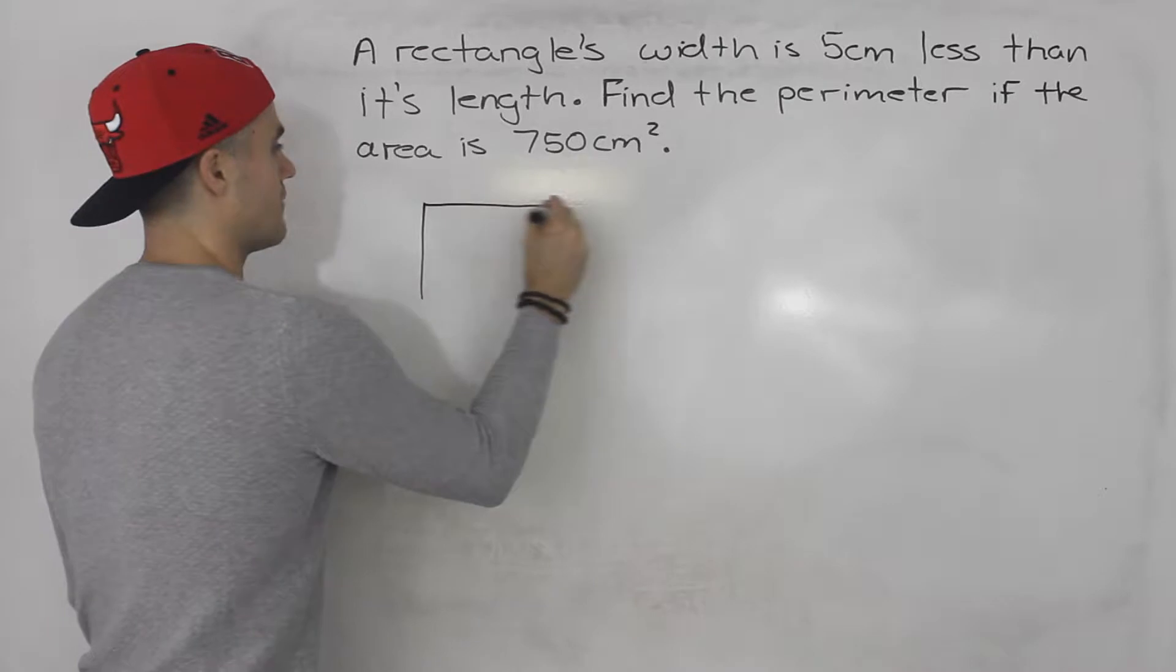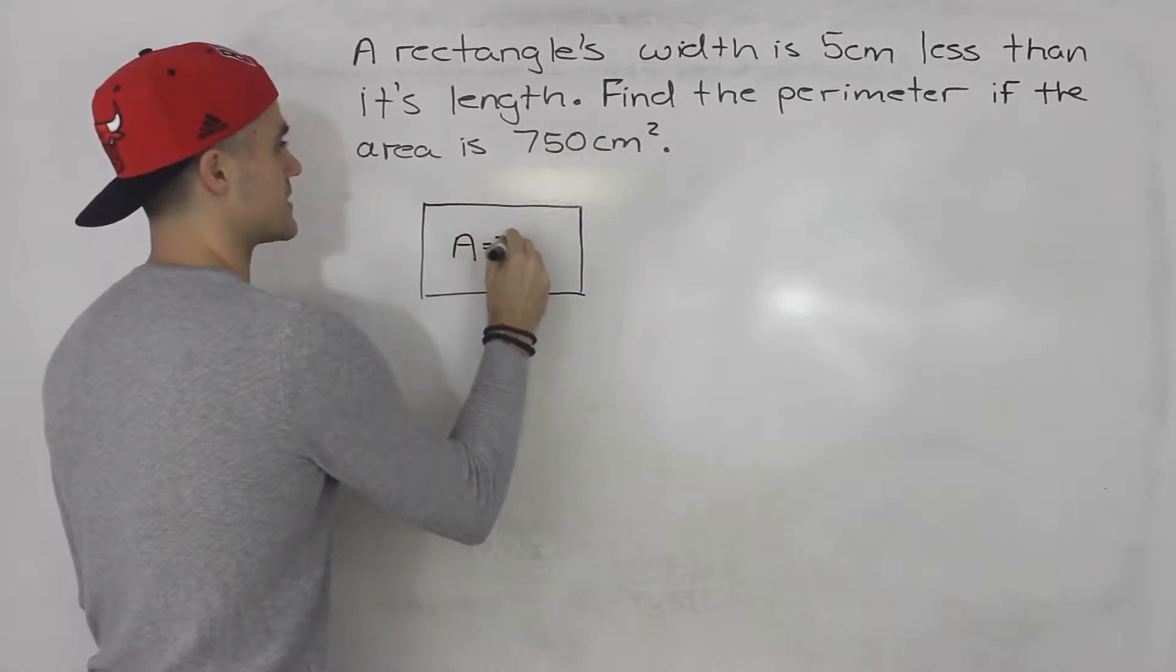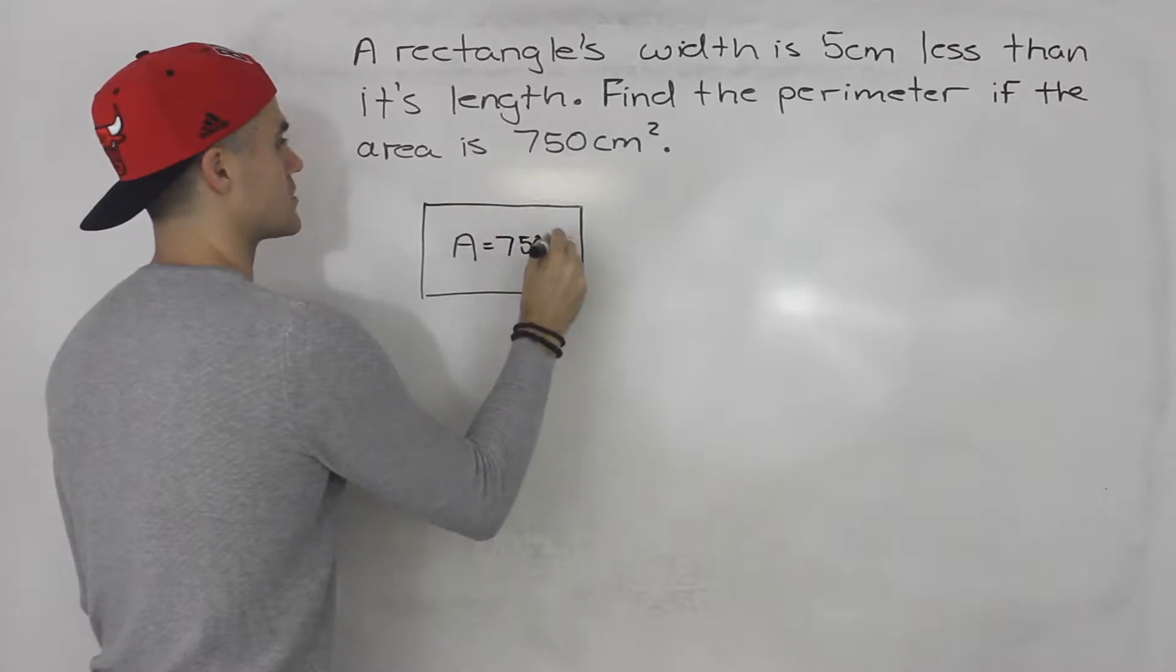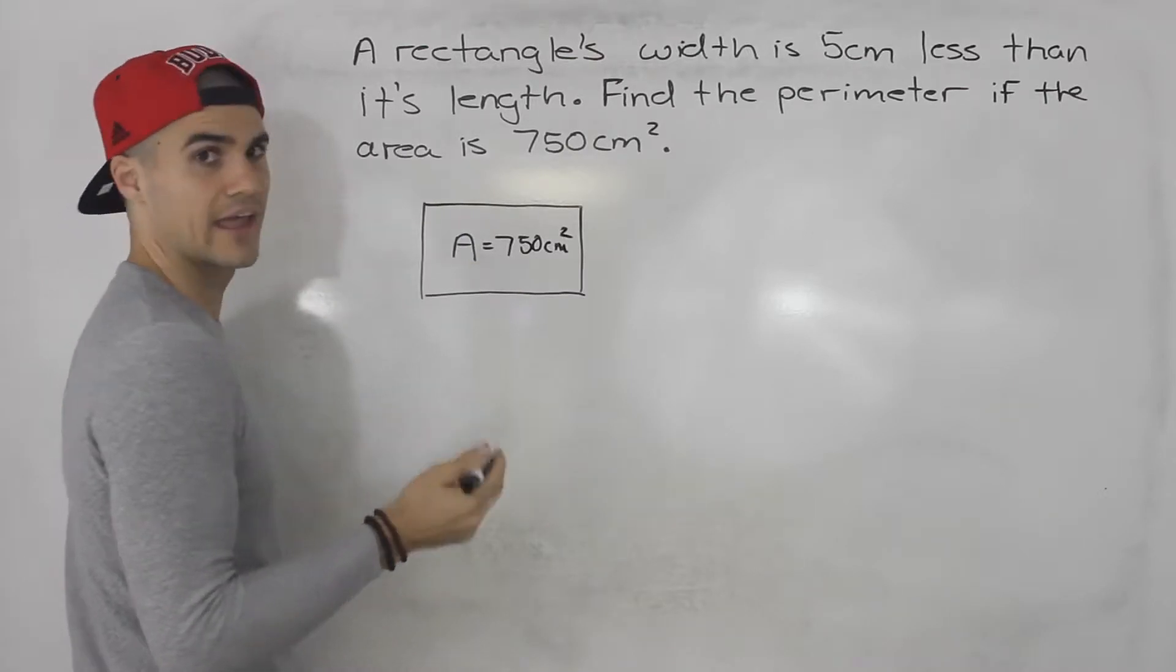Okay, so we have this rectangle here. We're told its area is 750 centimeters squared, and we're told its width is five centimeters less than its length.